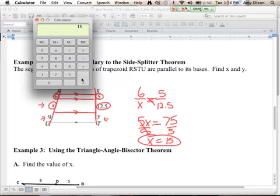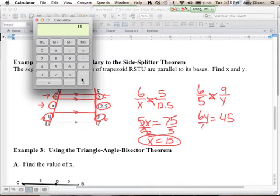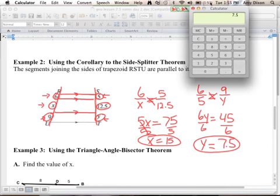I'll leave the calculator up there, we might need it. To find Y, we can use the 6 and 5 as our proportion, 6 over 5. 6 over 5 is to 9 over Y. And again, there's multiple ways to set that up. We cross multiply, we're going to get 6Y equals 45, divide both sides by 6. So let's do 45 divided by 6, we get 7.5, so Y is 7.5.